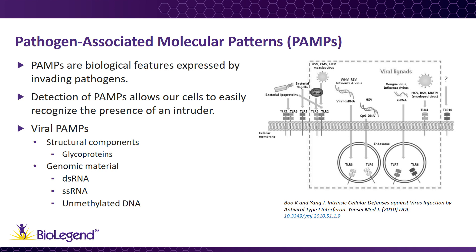Viral genomes have important characteristics that distinguish them from host genetic material. For example, reoviruses are a family of viruses that carry genomes composed of double-stranded RNA. Double-stranded RNA is not produced by eukaryotic cells, so the presence of these RNA molecules is a warning to the cell that there is an infection occurring.